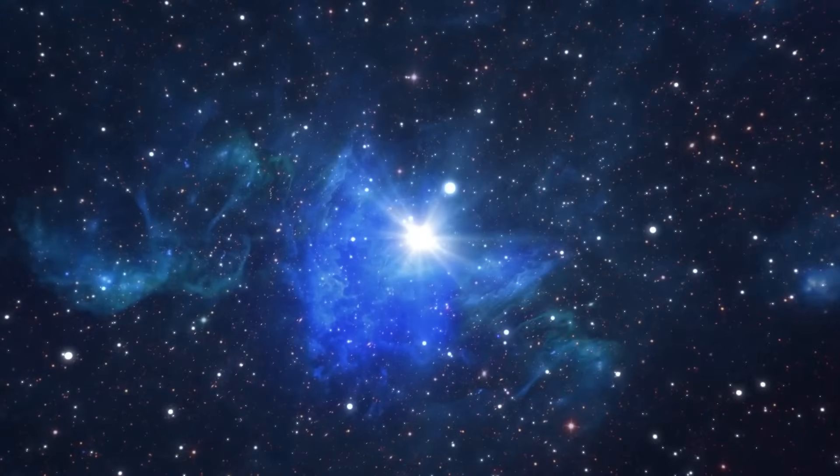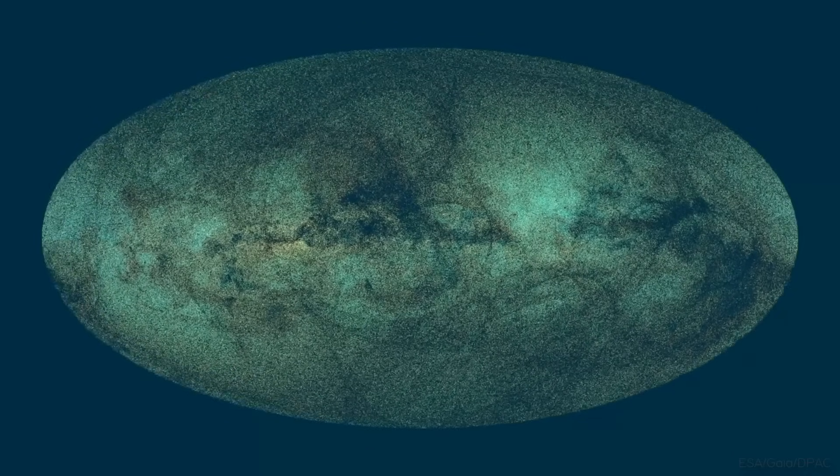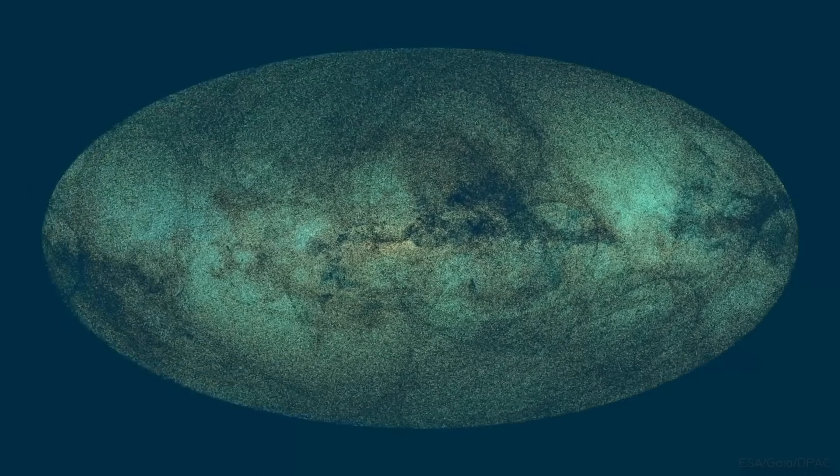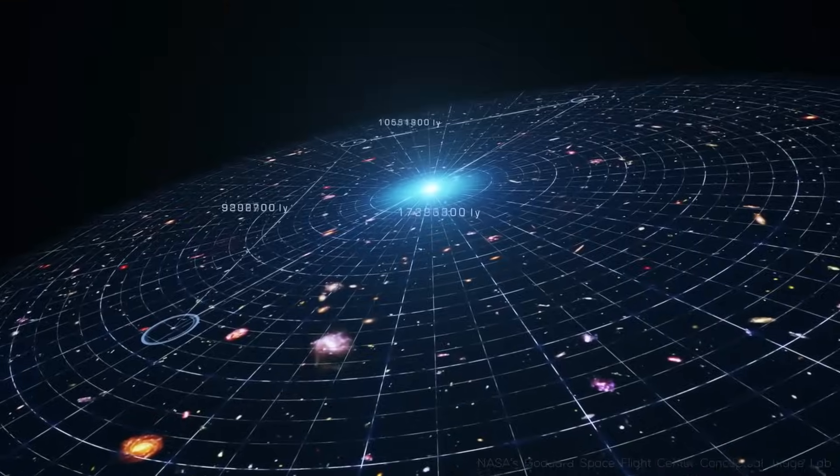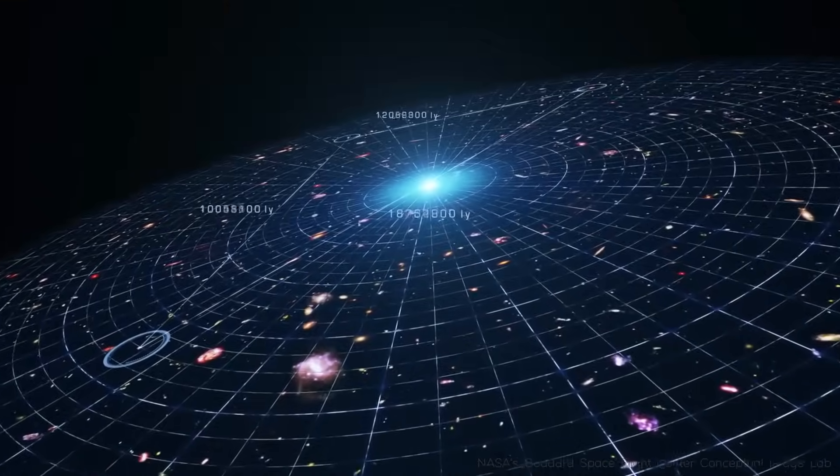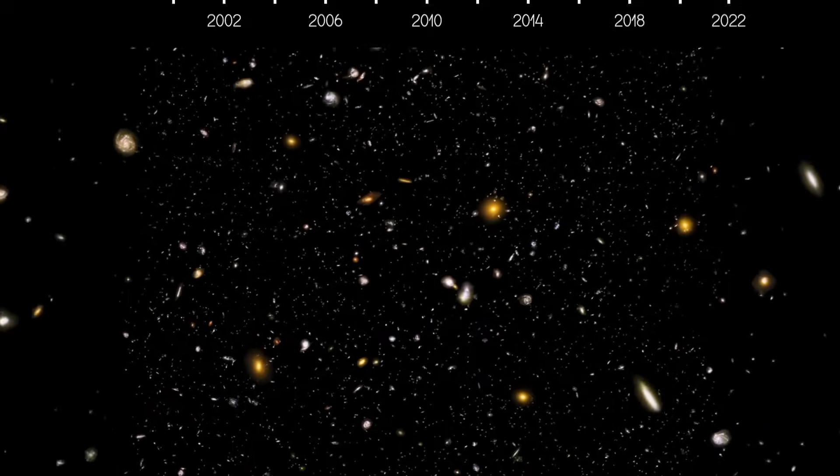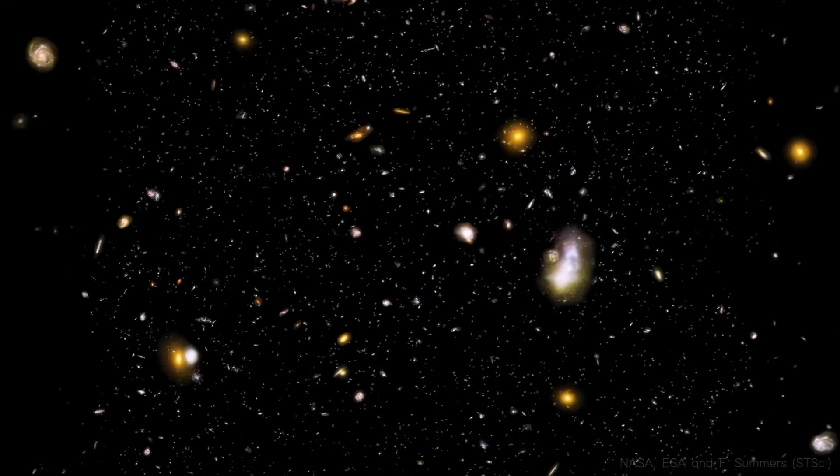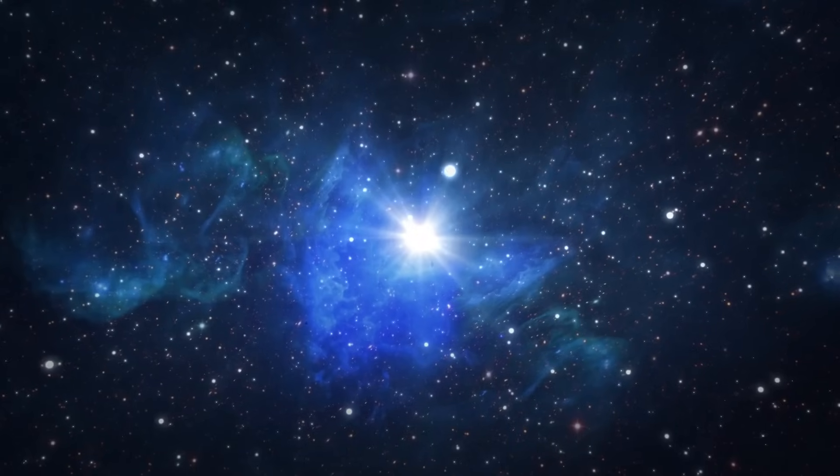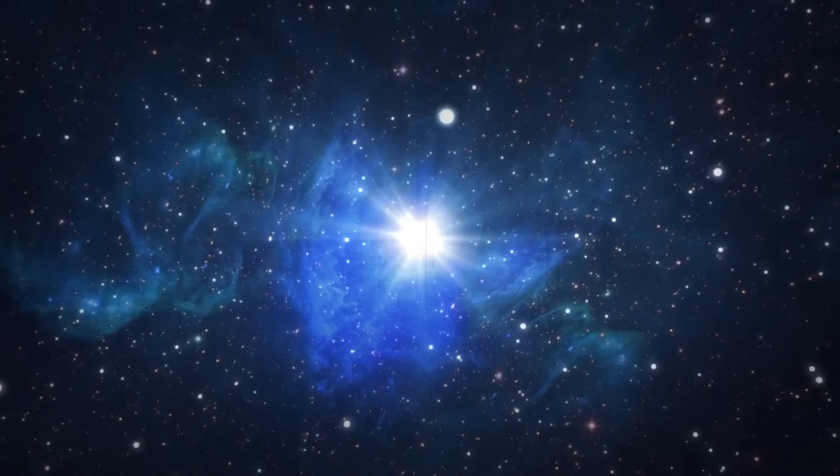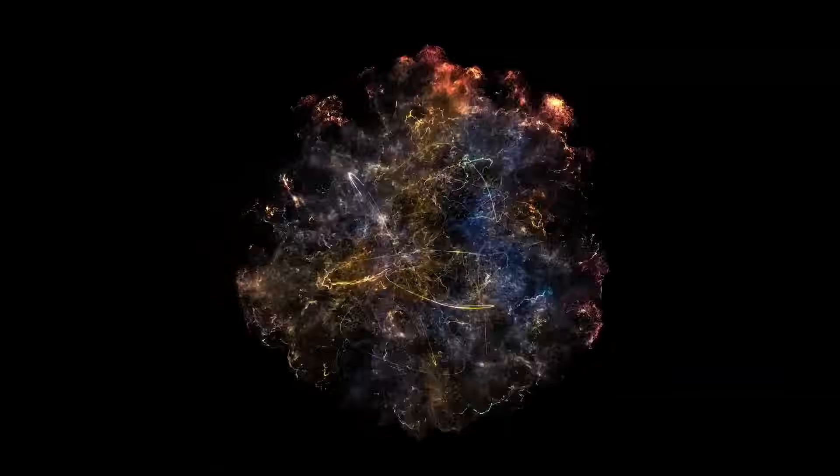If multiple universes exist, their gravitational pull could be subtly affecting how we perceive cosmic expansion, warping our measurements in ways we never expected. In other words, Hubble's constant might not be constant at all. It could be shifting due to forces beyond our own universe. This idea isn't just wild speculation. String theory, one of the most advanced models in modern physics, predicts the existence of extra dimensions and parallel realities.